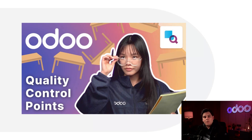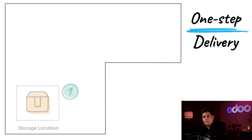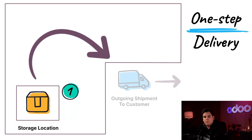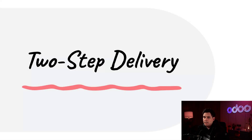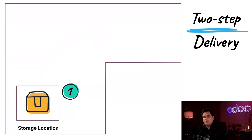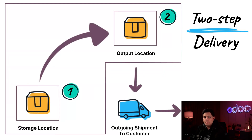Want to learn more? Check out our video on quality control points inside of Odoo. Now let's discuss deliveries — the same principles apply. One-step delivery is when products are shipped directly from stock; one moment it's in stock and after validating, it's outside the warehouse on its way to the customer. In two-step delivery, a dedicated picking team moves products to an output location where another team sorts, consolidates, and preps them for shipment.